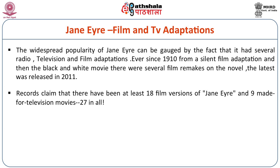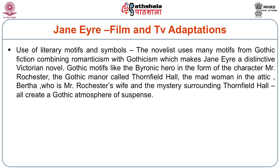The widespread popularity of Jane Eyre can be gauged by the fact that it had several radio, television, and film adaptations. Ever since 1910, from a silent film adaptation and then black-and-white movies, there were several film remakes. The latest was released in 2011. Records claim that there have been at least 18 film versions of Jane Eyre and nine made-for-television movies — 27 in all till date. Some literary characteristics of the novel should be discussed. The use of literary motifs and symbols is the first one. The novelist uses many motifs from gothic fiction, combining romanticism with gothicism, which makes Jane Eyre a distinctive Victorian novel.